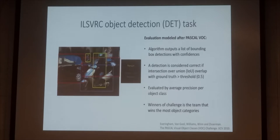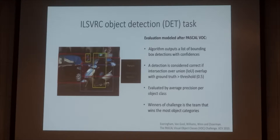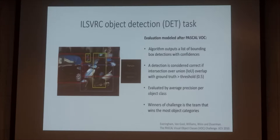For the evaluation, we use the Pascal VOC standard, that's the mean average precision or MAP. Basically for each category, each image, you compute the overlap between your prediction and the ground truth. If the overlap threshold is larger than 0.5, then it's a true positive. And then you compute AP for the whole image and compute the mean for all classes.